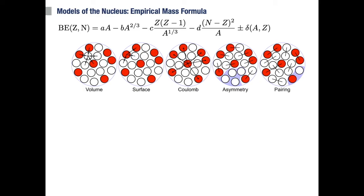And what we come up with, adding everything together, is the famous semi-empirical mass formula, which allows us to calculate the binding energy and mass for any combination of Z and N.